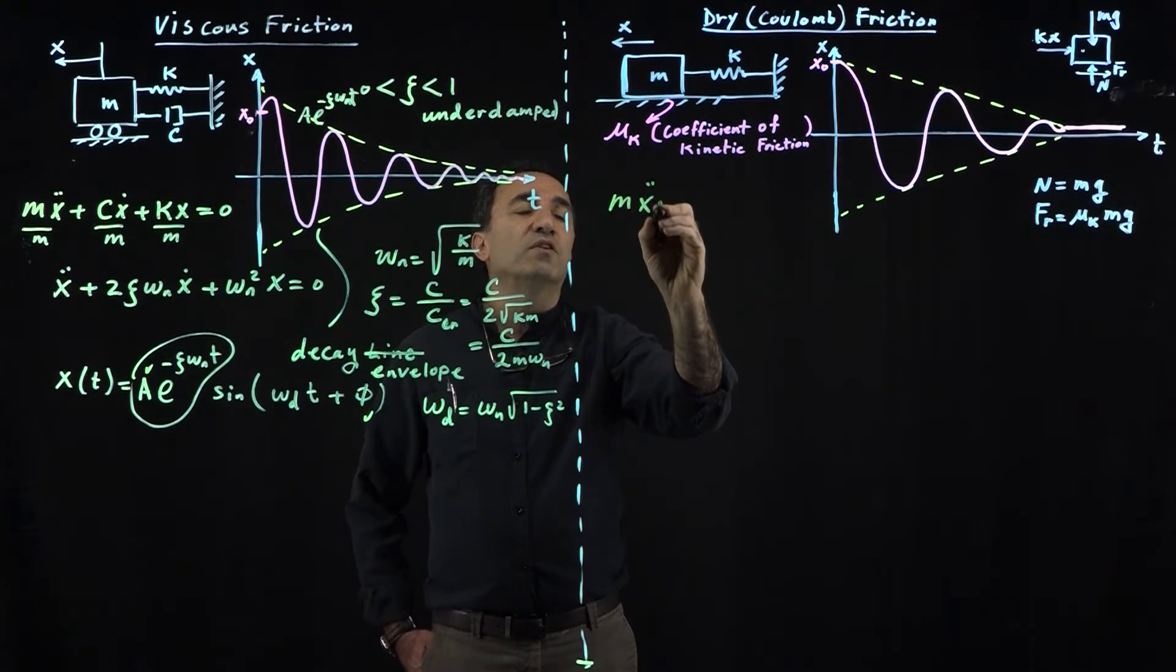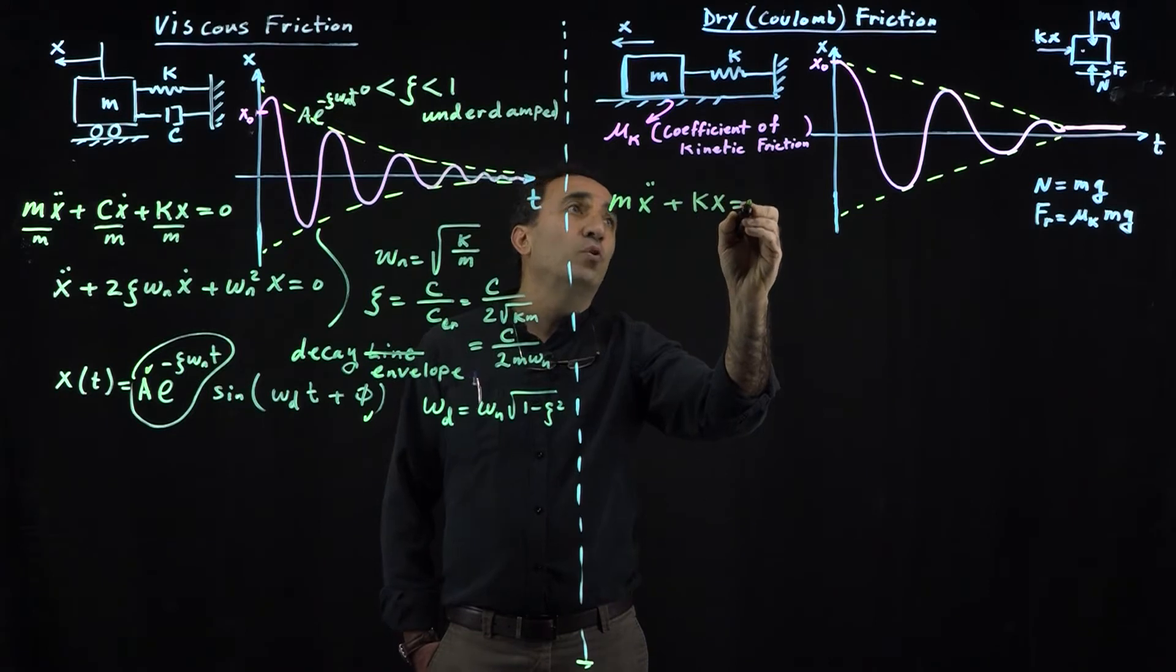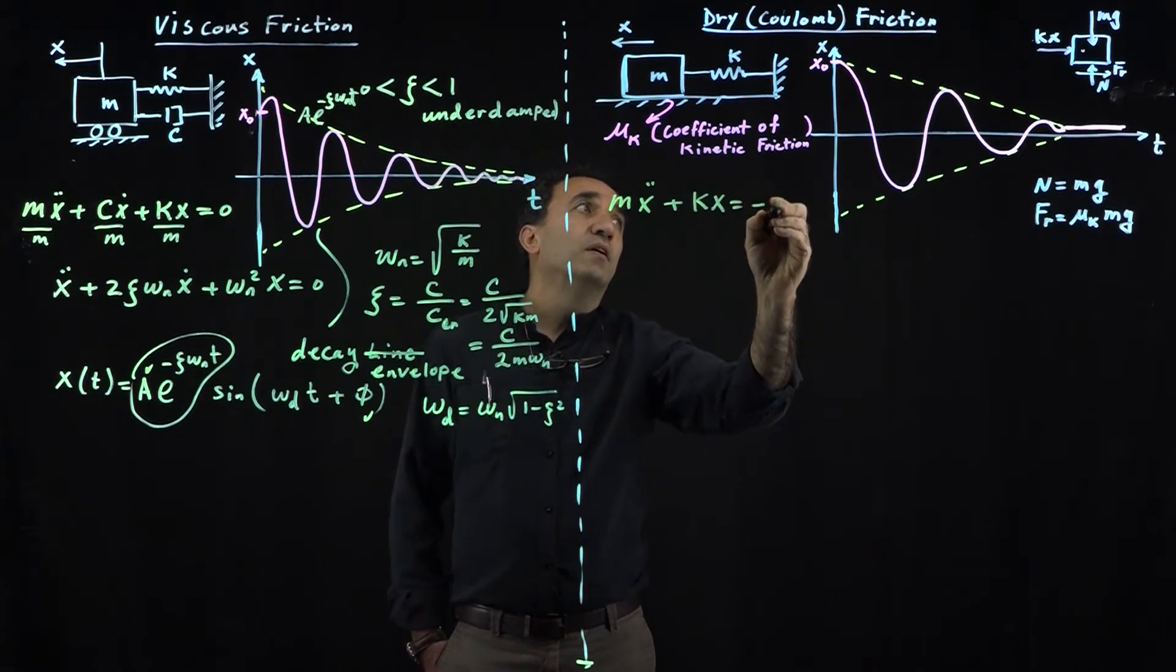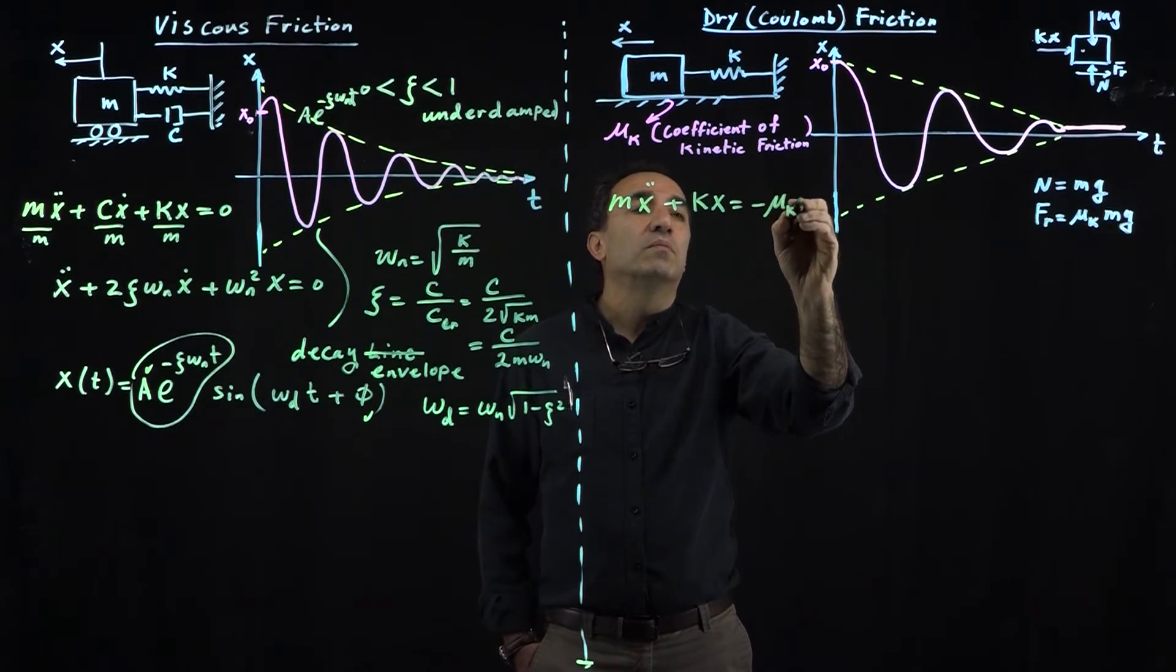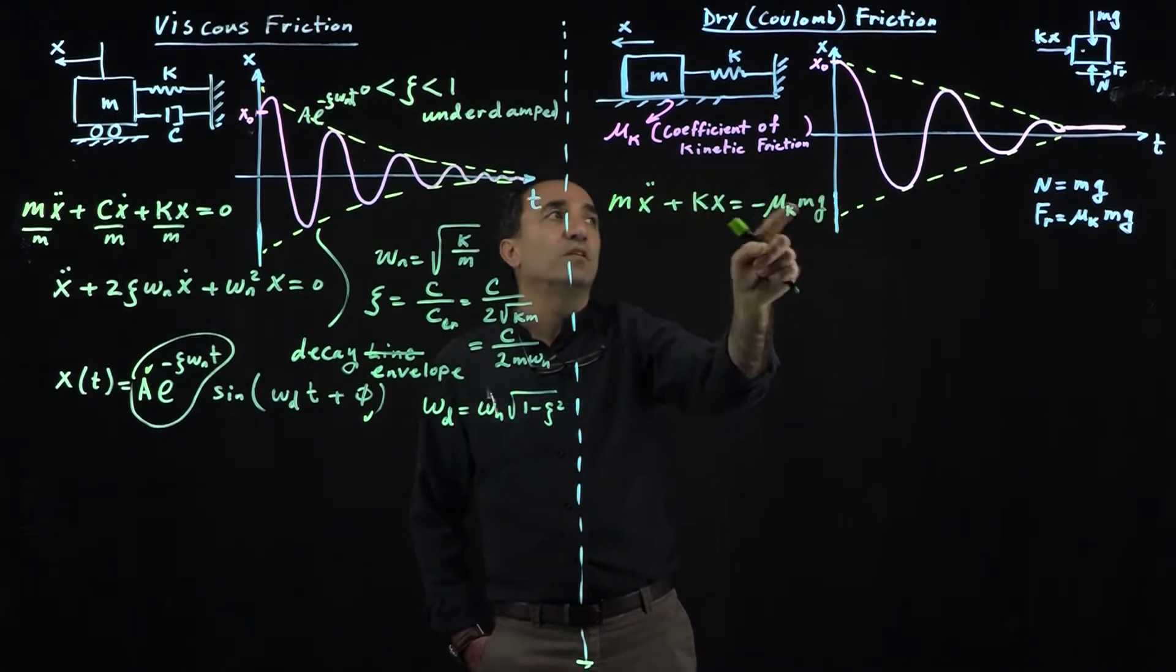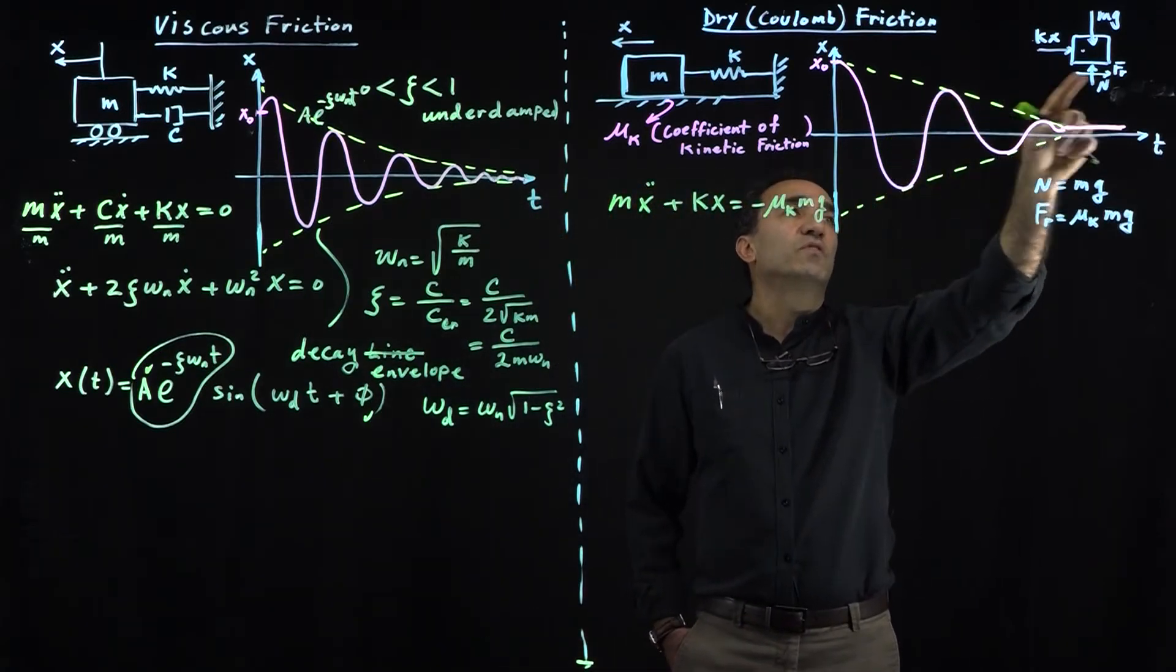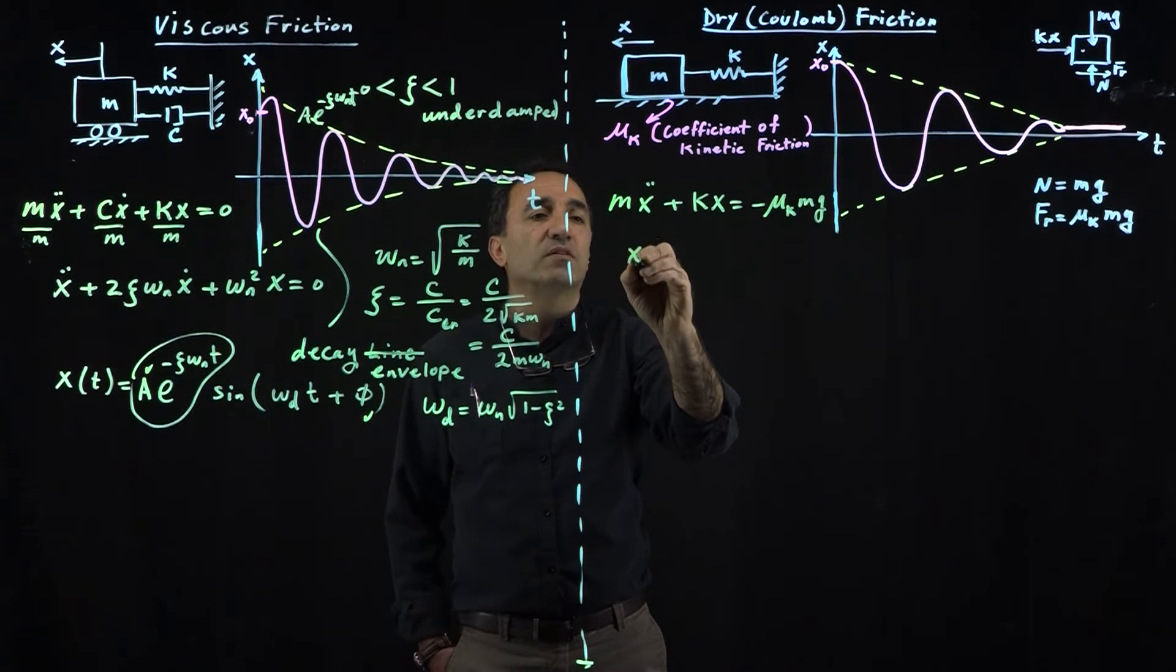Our system over here, if you write the differential equation, would be MẌ plus KX equals negative mu_k mg, and that is the friction force that will appear in this equation. If you sum the forces in the x direction equals mass times acceleration.